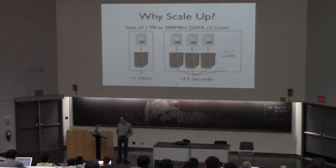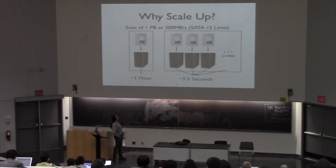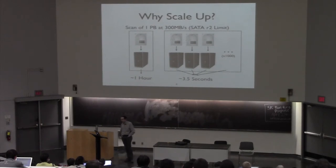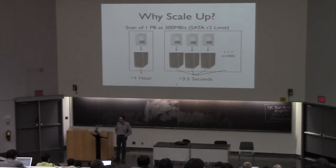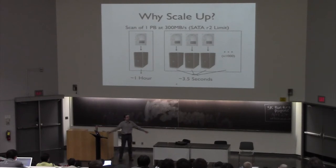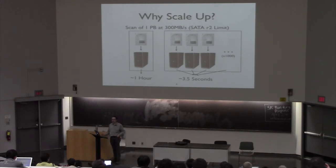To give you some vague sense of parallelism: if I were to do a scan of one file located on one hard disk drive running at the SATA revision 2 limit of 300 megabytes per second, it would take me about one hour to fully scan through a full petabyte of data. One petabyte is small beans these days — any major company is dealing with multiple petabytes. But if I take that same file, split it over a thousand drives, I've increased my bandwidth by a factor of a thousand — a one-hour task now takes three and a half seconds.